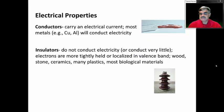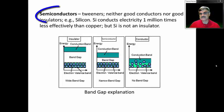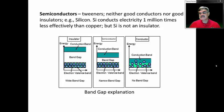Wood, stone, ceramics, many plastics, and most biological materials are not conductors of electricity to any appreciable degree. So why do some materials conduct electricity and others not? There are also materials with properties in between — we call these semiconductors. They are neither good conductors nor good insulators. Silicon is an example of a semiconductor material — it conducts electricity about a million times less efficiently than copper, but it is still not an insulator.